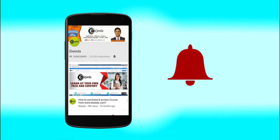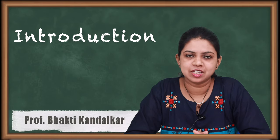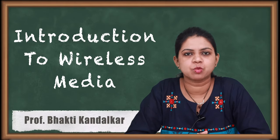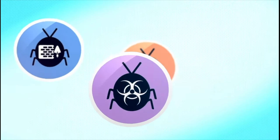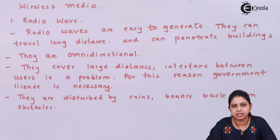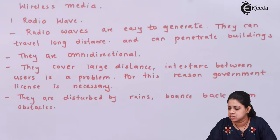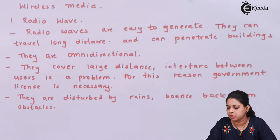Hello friends, in this video we will discuss the various wireless media. Let us start with radio waves. Radio waves are easy to generate, they can travel a long distance, and can penetrate through a building. They are omnidirectional, they cover a large distance, and interference between users is a problem. For this reason, a government license is necessary.